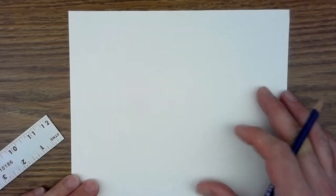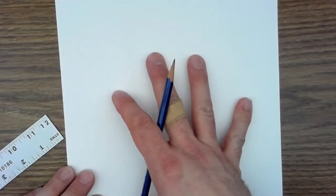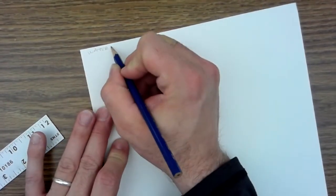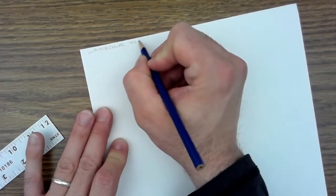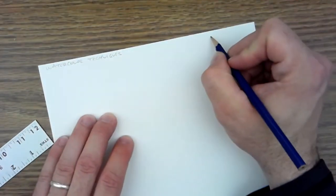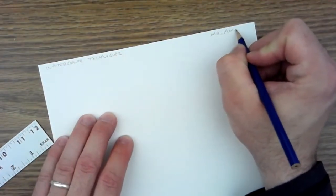Let's start our watercolor techniques today. We've got to set up the paper. So the first thing we want to do is write what it is that we're doing. So up at the top on the left, using my H pencil, watercolor techniques and my name.